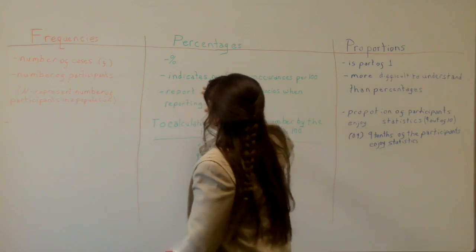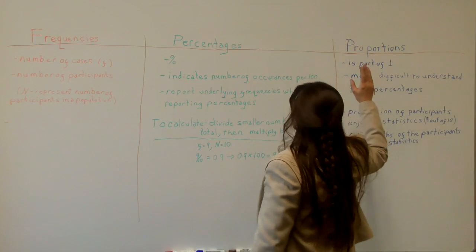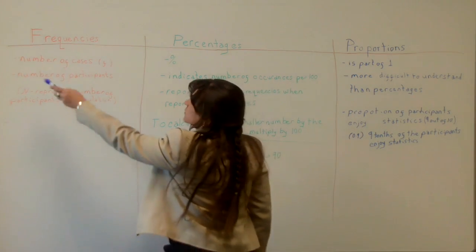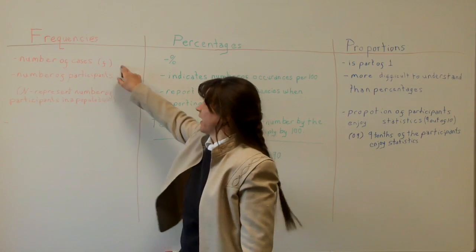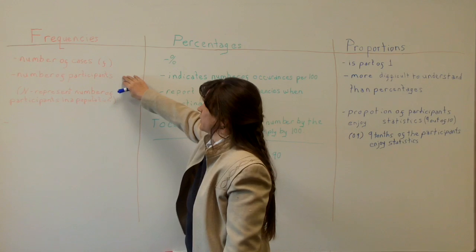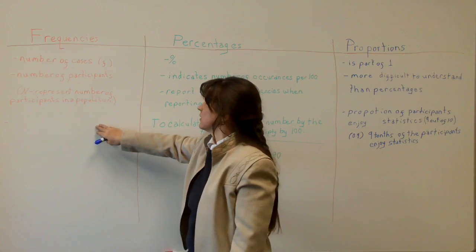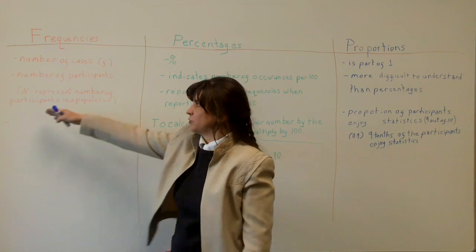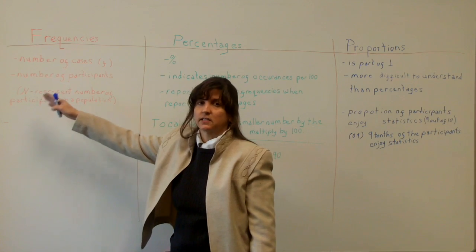Our next section is frequencies, percentages, and proportions. Frequencies are the number of cases, represented by an italicized lowercase f. This can also be the number of participants. If it represents a population, the symbol for that is an uppercase italicized N.